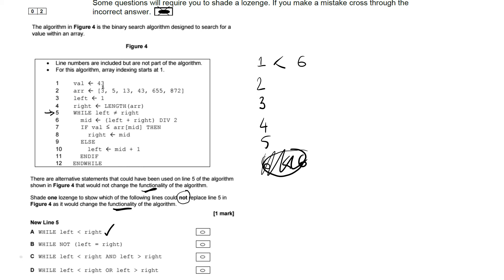Option B is: while not left equals right. That means while the statement left equals right is false — which is essentially the same as left not equal to right. When it gets to six equals six, the loop breaks. So this option also wouldn't change the functionality of the algorithm.